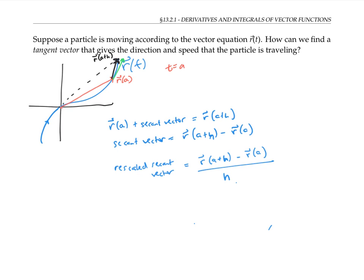This is very analogous to the calc one calculation of derivatives, where we didn't just take the difference in y values in the numerator, which would have just gone to zero — we had to rescale it by taking a difference in x values also. Now to get the tangent vector, we just take the limit as h goes to zero of these rescaled secant vectors.